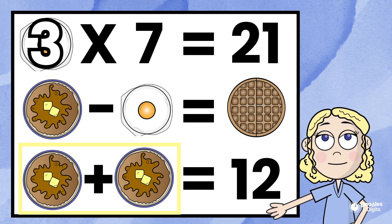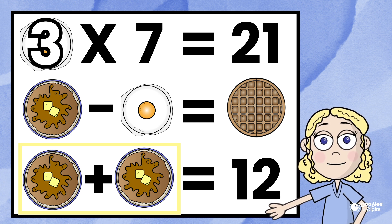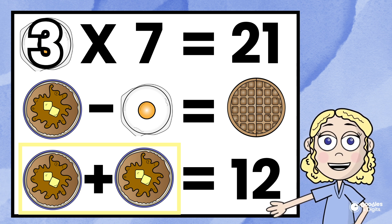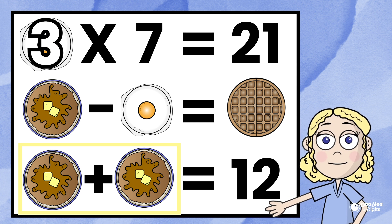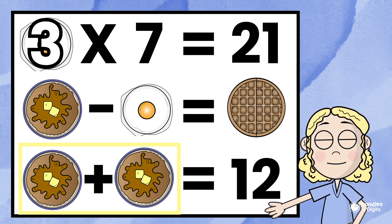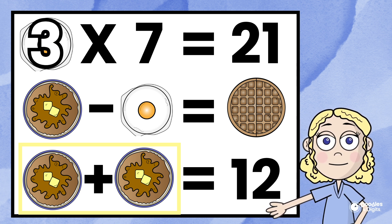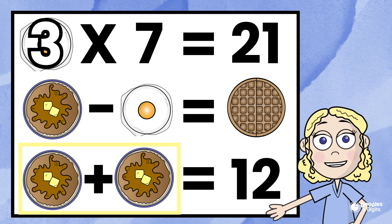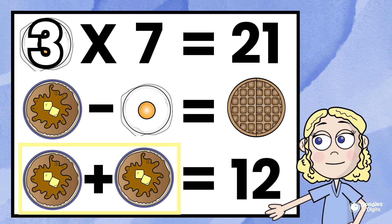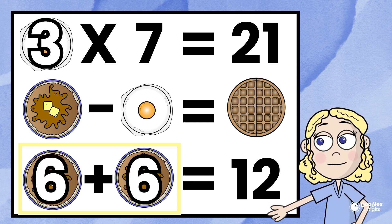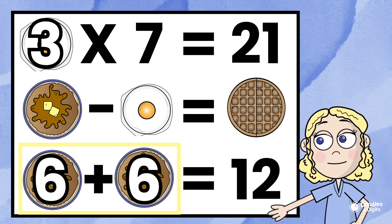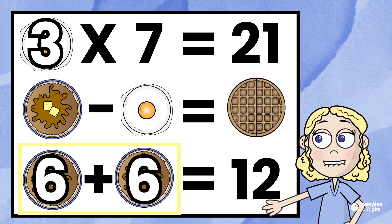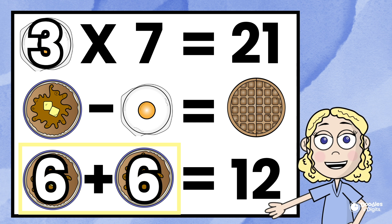Pancake plus pancake plus pancake equals 12. So I'm going to think: what plus what — that's the same number — equals 12? I think it's six. Six plus six equals 12. Wait, that's two sixes. Three sixes equal 12? No — six plus six plus six equals 18... Actually, four plus four plus four equals 12. So our pancake represents four.